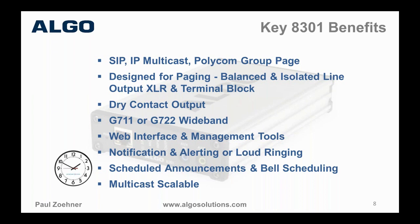G.711 or G.722 wideband support is really important — through the 8301, if you have phones that support HD voice or wideband G.722, you can get that audio quality right through to the amplifier. Very often the amplifier does support wideband, but that wideband is blocked by the ATA, which typically is G.711 only. The device is managed through a web interface and other management tools, so it can be remotely managed without needing to be on site. You also have very powerful notification and alerting capability — you can store wave files inside the device that can be activated in different ways, giving you a gateway not just for legacy paging but also for emergency notification or other types of alerts triggered by physical or SIP events.